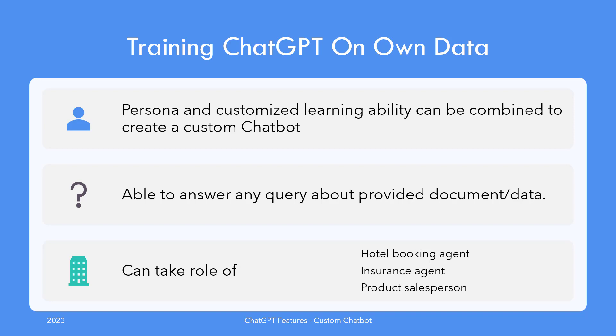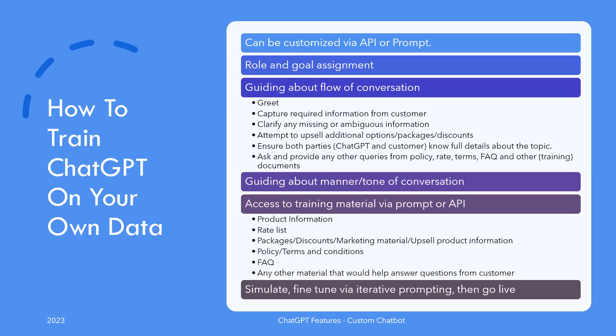As another example, you can train it as an insurance agent chatbot — train it on your insurance products and it should be able to sell insurance products to customers and answer all relevant questions while you take a nap. There are two ways to go about this: the programmatic way and the prompt way. Since this video series does not deal with direct programming, we'll skip that and focus on prompts, though programming integration should be straightforward after watching this.